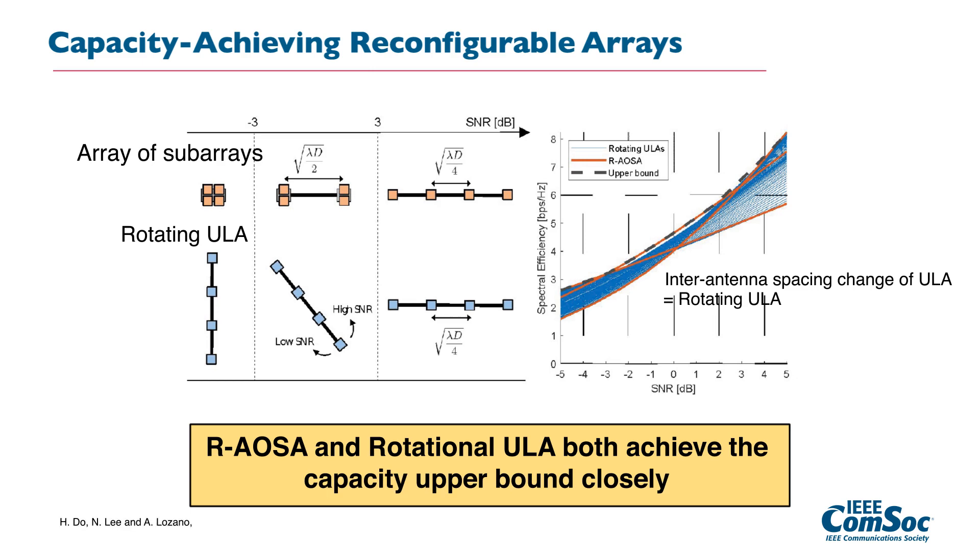Interestingly, we found two different structures. The first structure is the classical array-of-subarrays by tuning the inter-antenna spacing according to SNR as shown in this figure. In practice, however, this scheme is not preferable because of the physical limitation of antenna arrays. So we also proposed another array structure called rotating ULA, which basically rotates the angles depending on the SNR to construct such a line-of-sight MIMO channel with polarized eigenvalues.